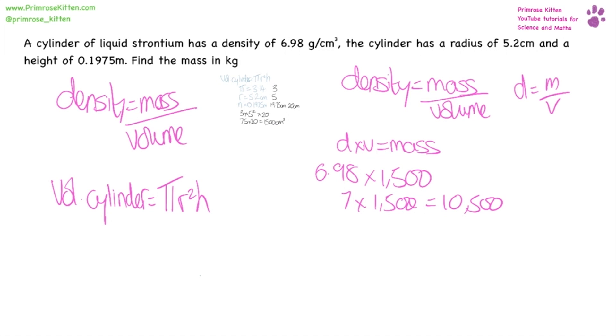Now we need to think about our units here. This is in grams per centimeter cubed. This is in grams. And it wants the answer in kilograms. So to turn grams into kilograms, we need to divide that by 1,000, giving us an answer of 10.5 kilograms.